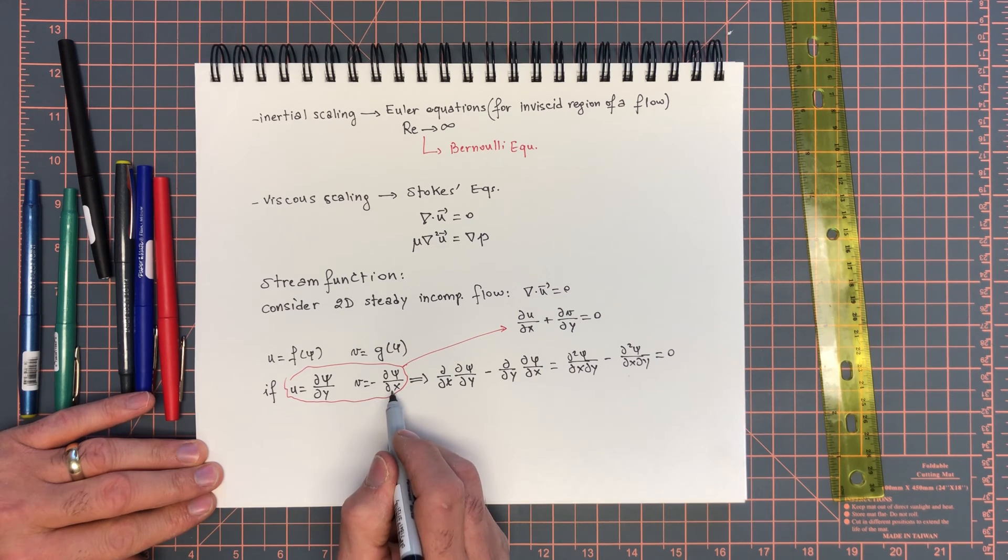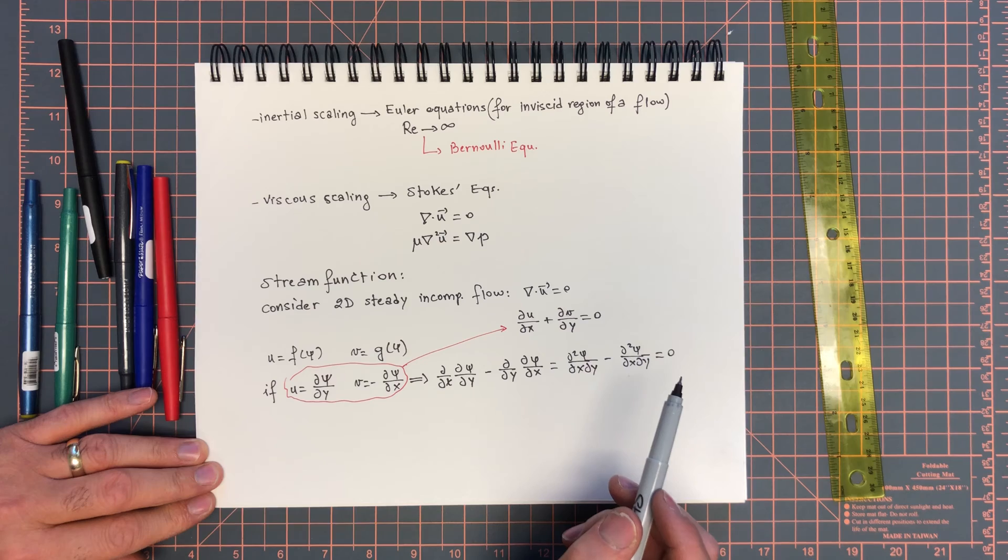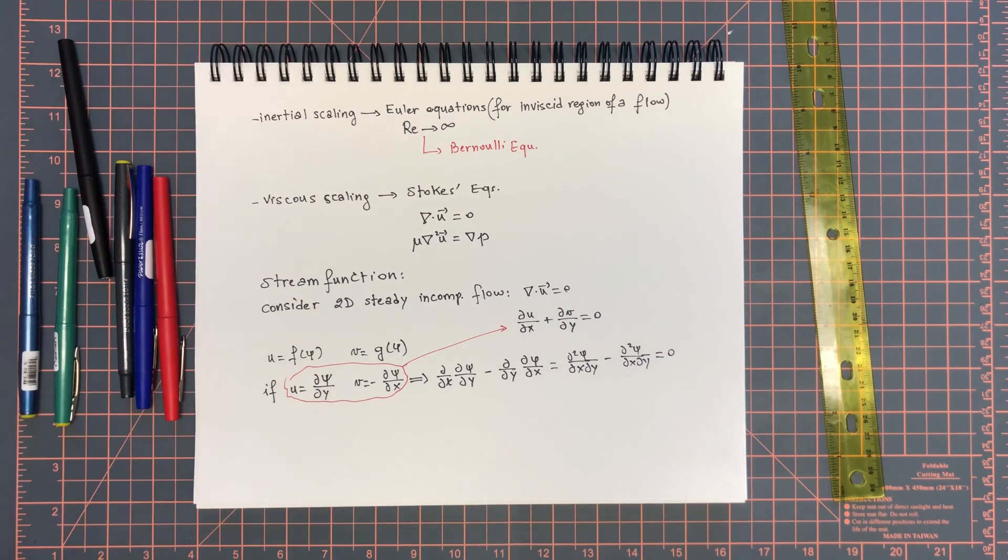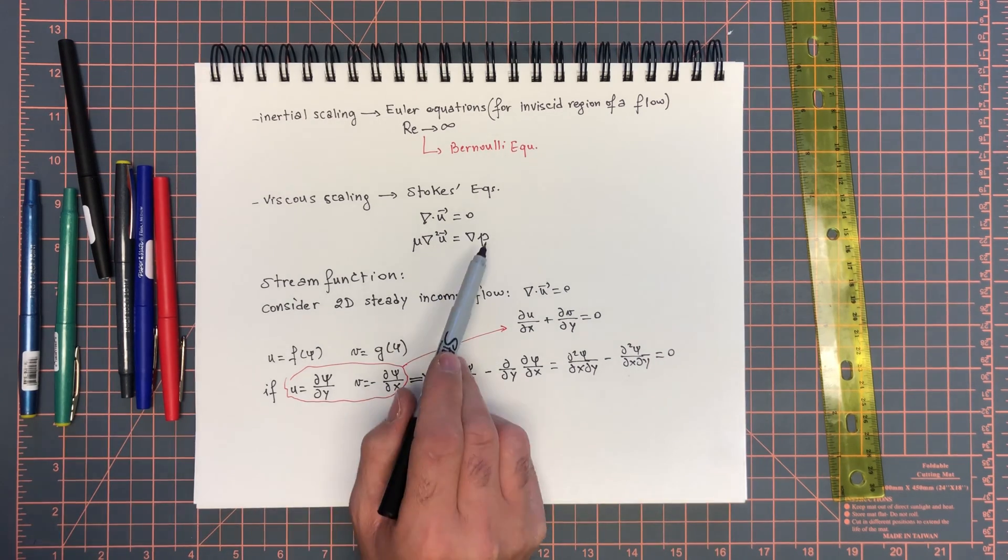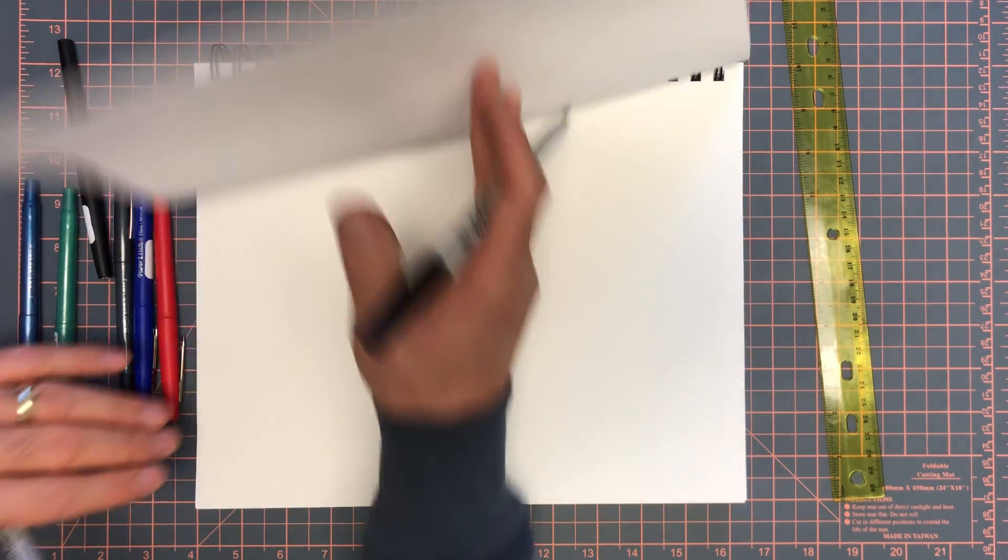Indeed it equals zero. So if you choose ψ such that u is dψ/dy and v equals minus dψ/dx, you are automatically satisfying the continuity equation. So that's good - we've knocked out one of the equations in our system. However, there are some properties of the stream function, so let's look at those.